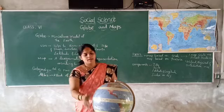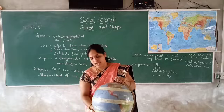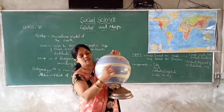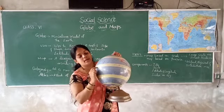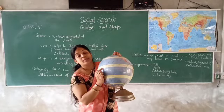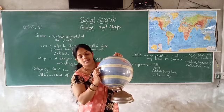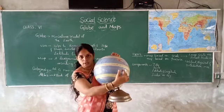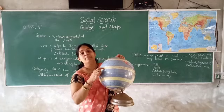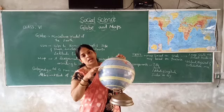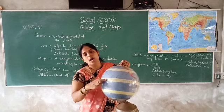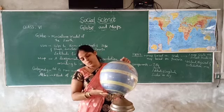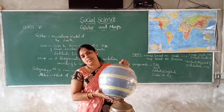Apart from that, can you observe in the globe some yellow line? It is the largest latitude — it is an imaginary line drawn on the globe at the middle. This equator divides the earth into two halves: one is the northern hemisphere and one is the southern hemisphere.